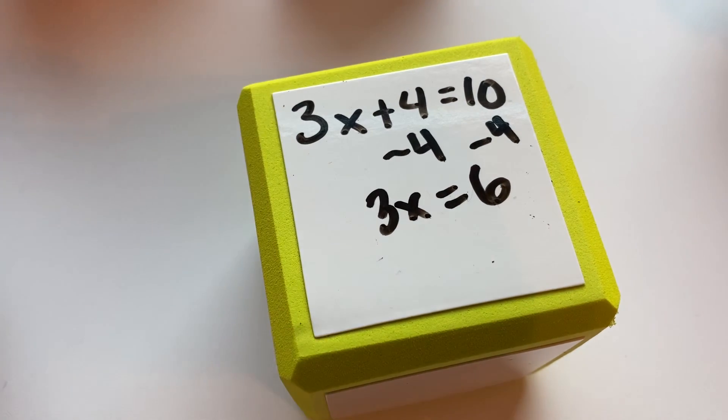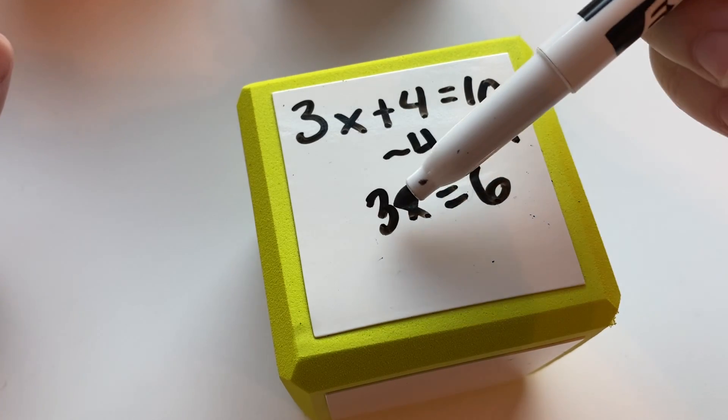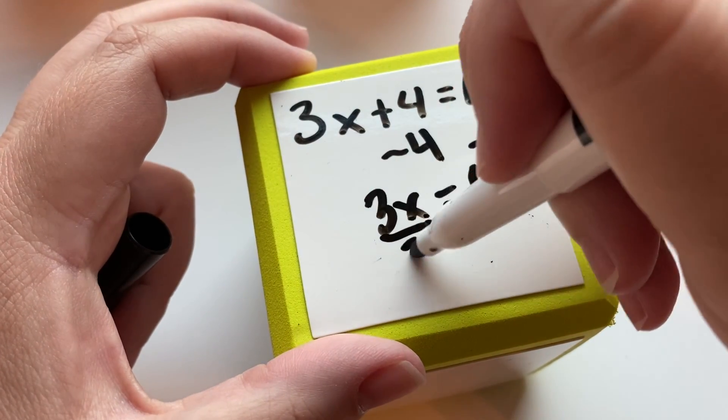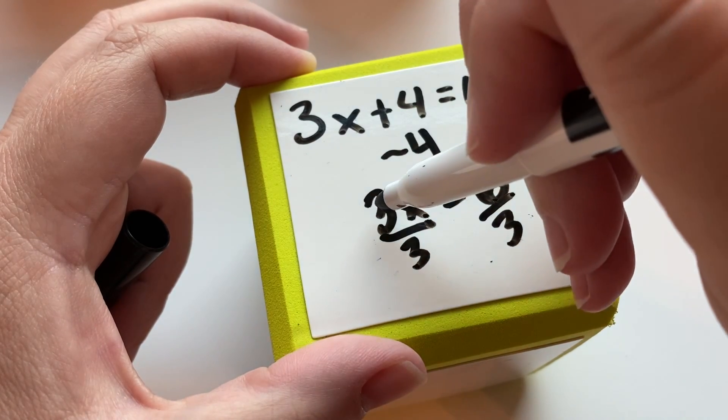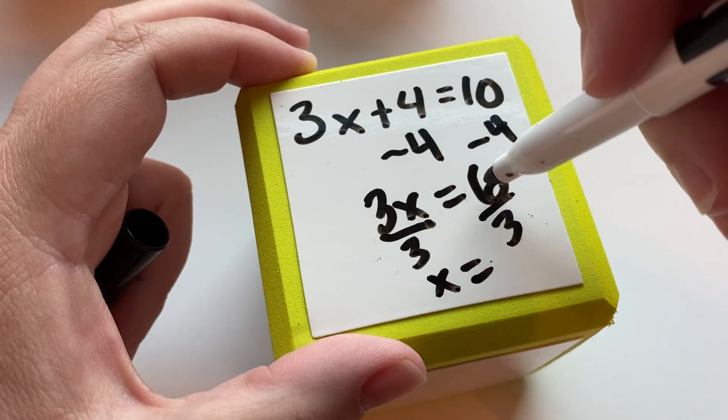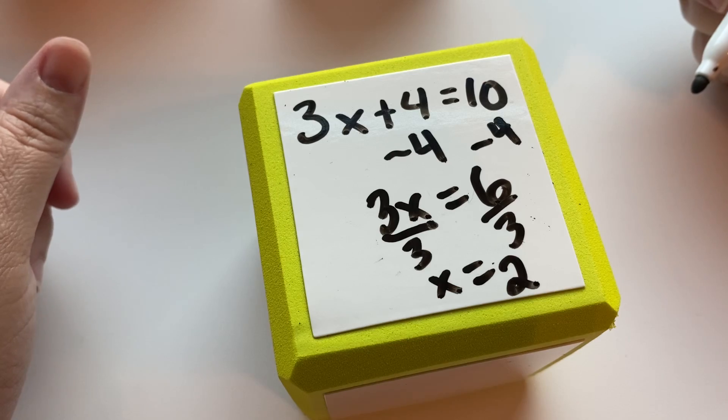That's why we did that. And then 10 minus 4 is 6, so our equation is still balanced. We continue to the next operation. This is 3x, so that's 3 times x. The opposite of times is dividing, so we're going to divide. 3 divided by 3 is 1, so we're left with 1x, and then 6 divided by 3 is 2. So x is equal to 2.